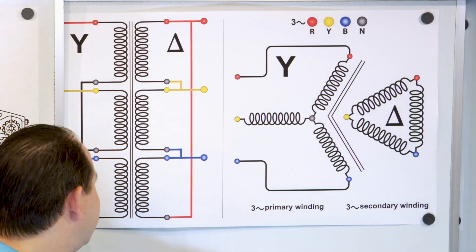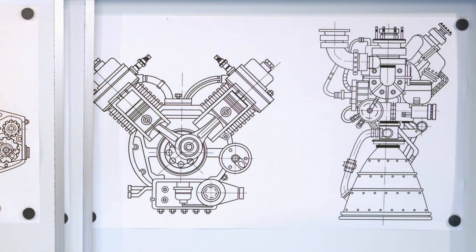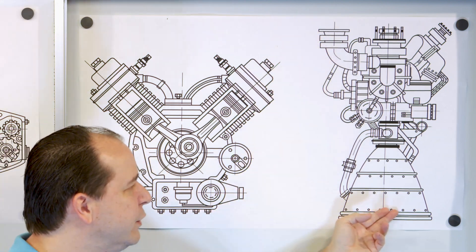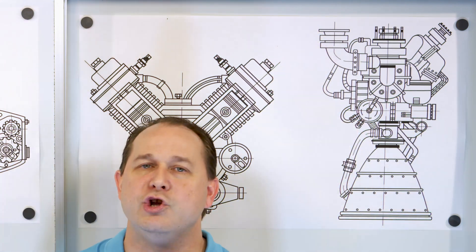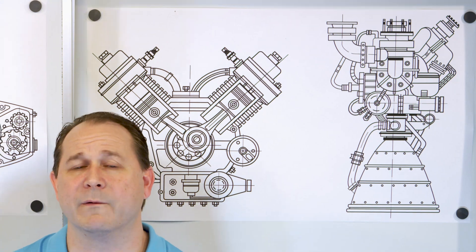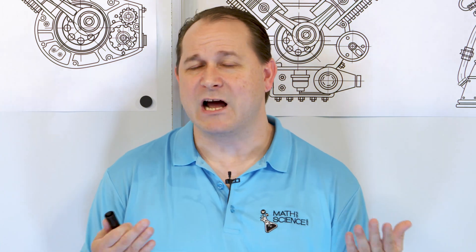The alpha encabulator has reached a high level of development and is currently successfully being used in the operation of novatrunnions. Furthermore, if a fluorescent score motion is ever required, it may also be employed in conjunction with a drawn reciprocation dingle arm in order to reduce sinusoidal repleneration. It's not cheap, but I'm sure the government will buy it.